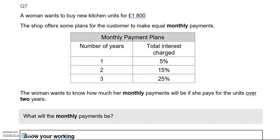Question 7. A woman wants to buy new kitchen units for £1800. The shop offers some plans for the customer to make equal monthly payments. A woman wants to know how much her monthly payments will be if she pays for the units over two years. Looking at the table, two years will be 15% total interest charged.